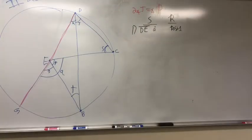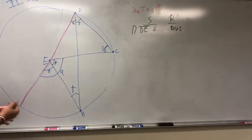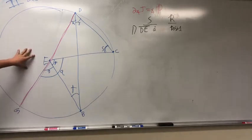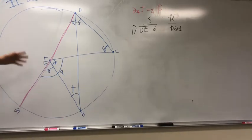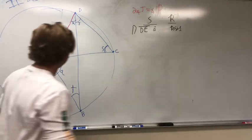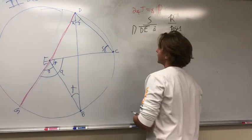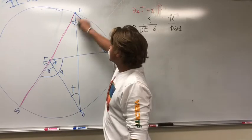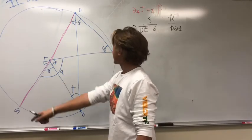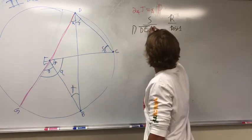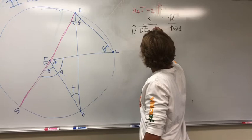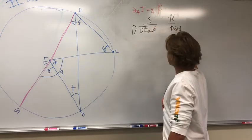Welcome to the second part of Book 3, Proposition 20. This is the same picture as before, just brought out to make it a little cleaner. The only thing added is that line DE has been extended through to point G, using Postulate 1.